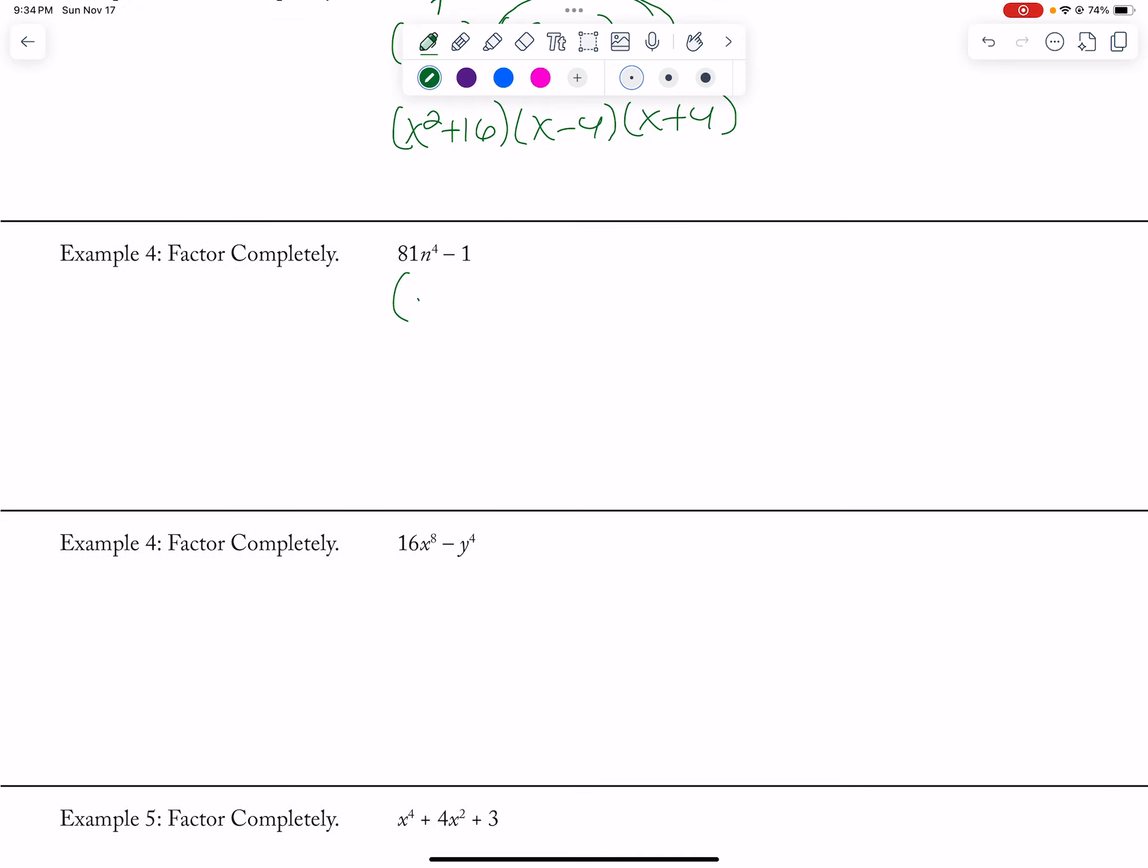So 81 is 9N squared minus 1. So an N squared minus 1 and a 9N squared plus 1. Again, this one factors to a difference of squares. So 3N minus 1, 3N plus 1, and a 9N squared plus 1.